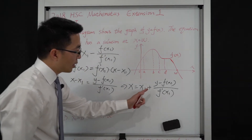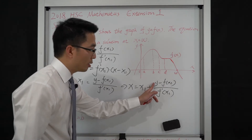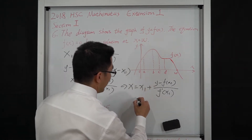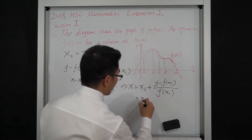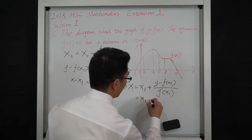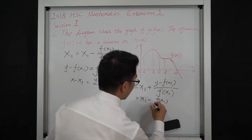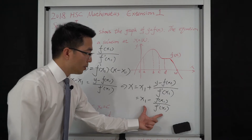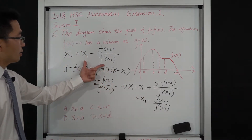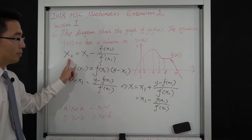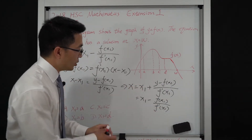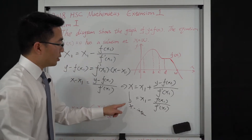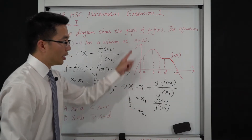Look at this equation. If y equal to 0, then x equals x₁ minus f(x₁) divided by the differentiation of the function at x₁. This part is exactly the same as Newton's method for the second approximation. In this equation, this x is actually the x-intersection, which means the tangent line cutting with the x-axis.